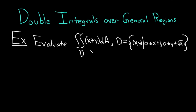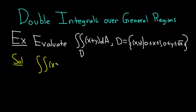We are going to evaluate the double integral of x plus y over d, where d is the set of ordered pairs such that x is between 0 and 1, and y is between 0 and the square root of x. So we have our double integral of x plus y, and now we need to figure out whether we put dy first or dx first.